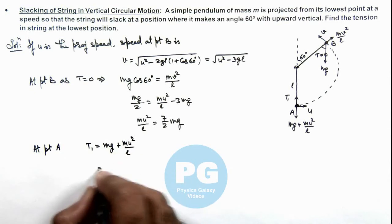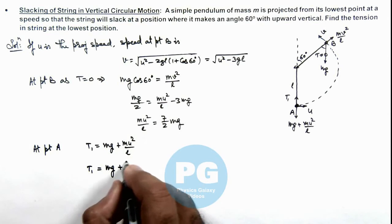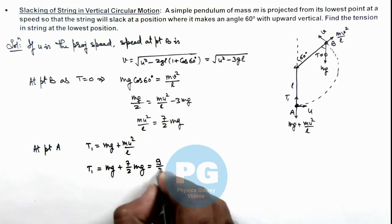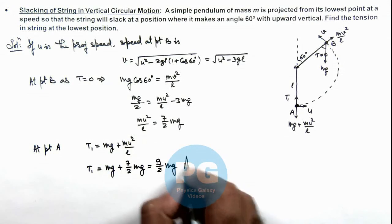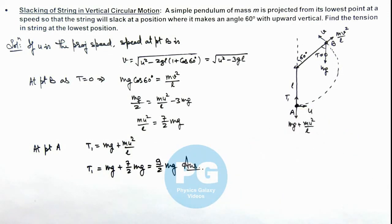On substituting the values, T₁ will be mg plus mu² by l, we can write as 7 by 2 mg. So this is equal to 9 by 2 mg. That is the final result of this problem: the tension at the bottommost point, the starting point from where the bob was projected.